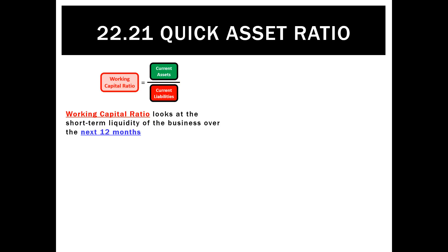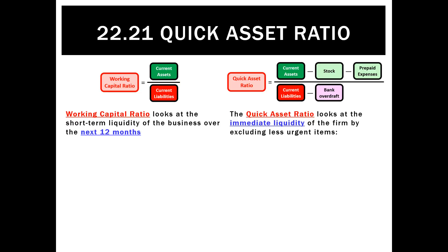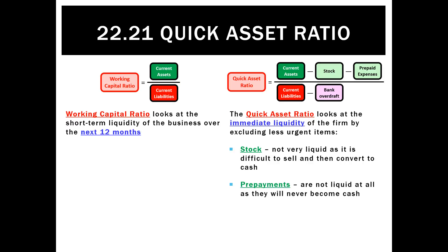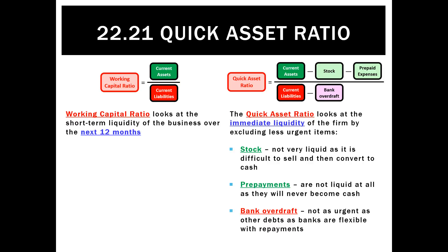The working capital ratio is good because it looks at the short-term liquidity of the business over the next 12 months. The quick asset ratio is a little bit better though, because we exclude some of the less urgent items. We get rid of stock — it's not very liquid, it's difficult to sell, and we may even sell on credit and have to follow up with a debtor. We also get rid of prepayments because they're not liquid and will never become cash. For current liabilities, we exclude the bank overdraft because money is going into our bank account each day, so the bank doesn't usually put up a fuss, and the overdraft will probably soon be resolved.